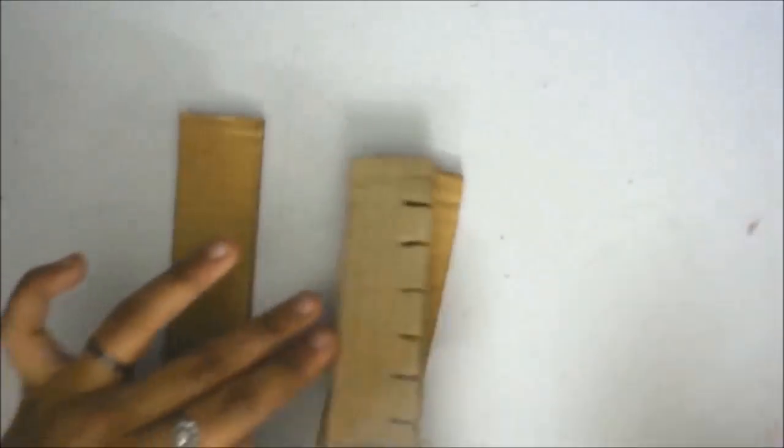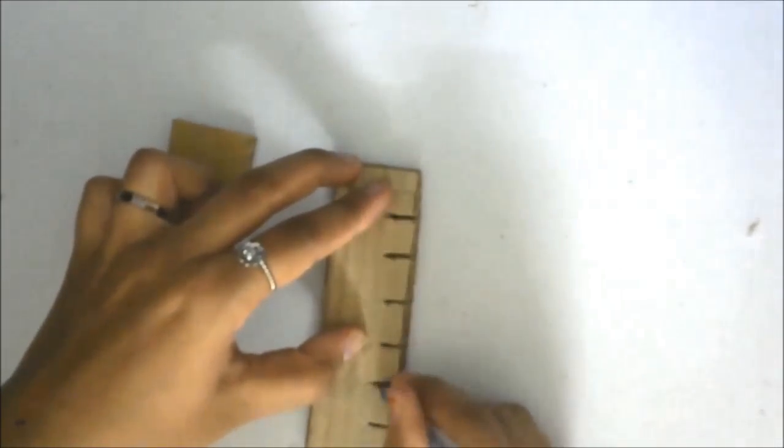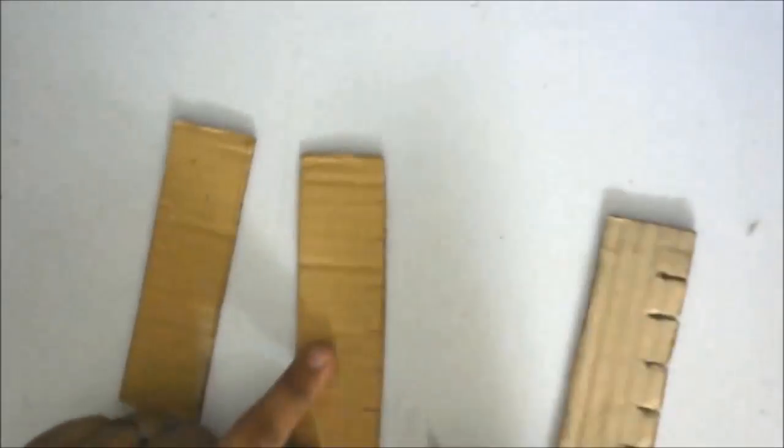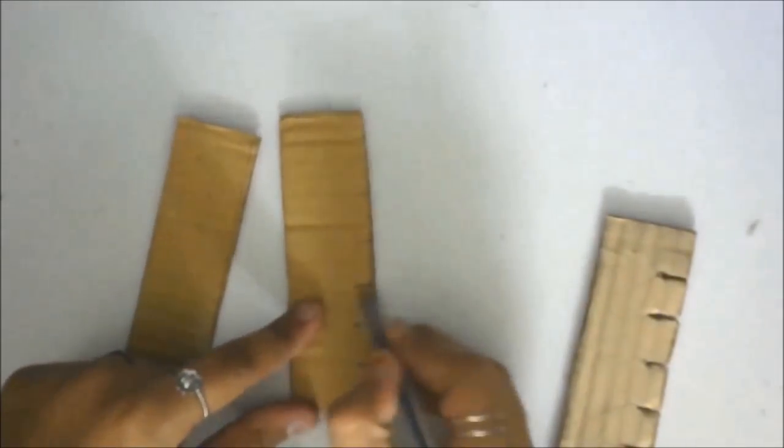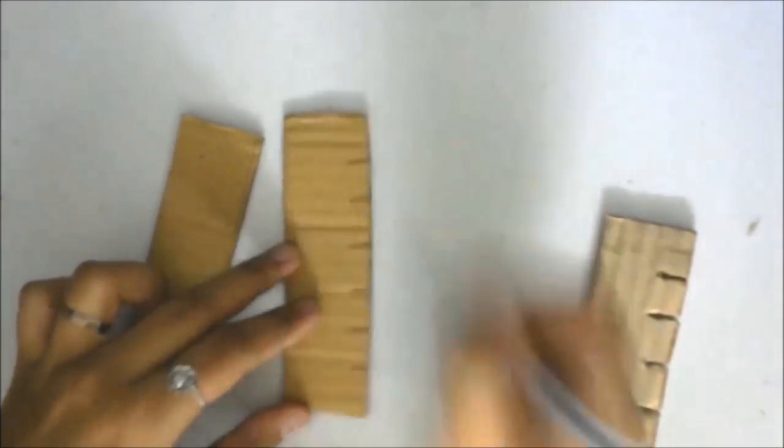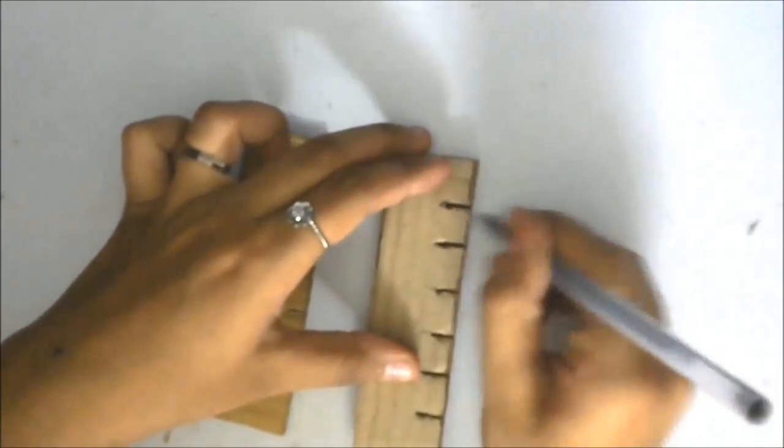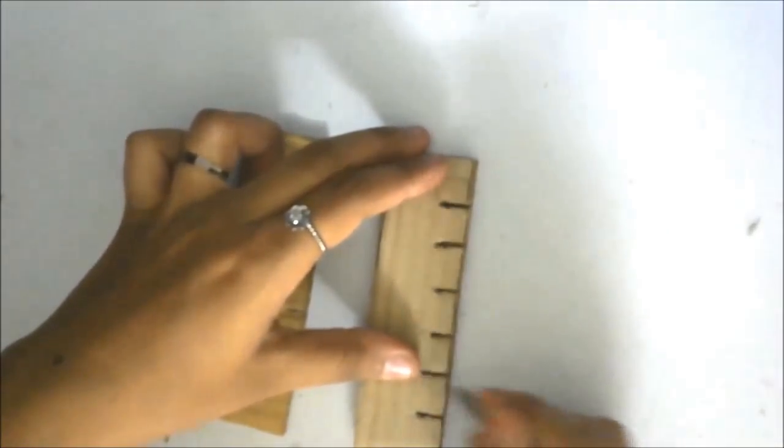Now take the remaining two. Keep this one as a reference and mark the points. You can also darken the points in case they are light. Now mark the points at the interval of two centimeters and cut the slits using a pair of scissors for these two cardboards also.